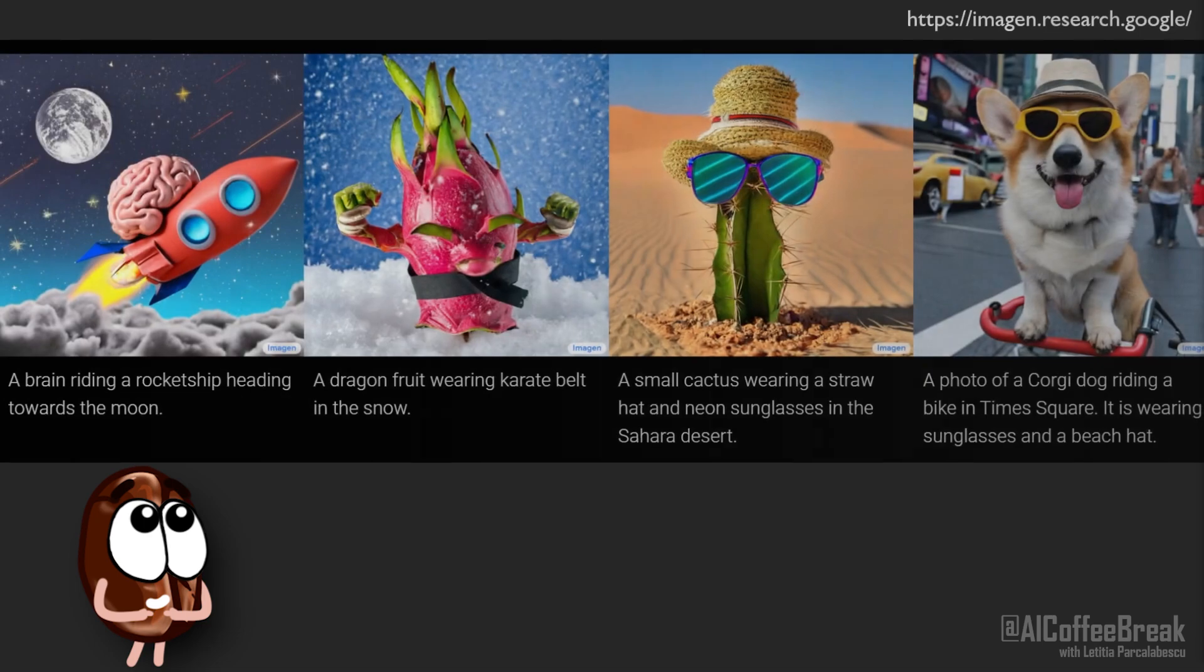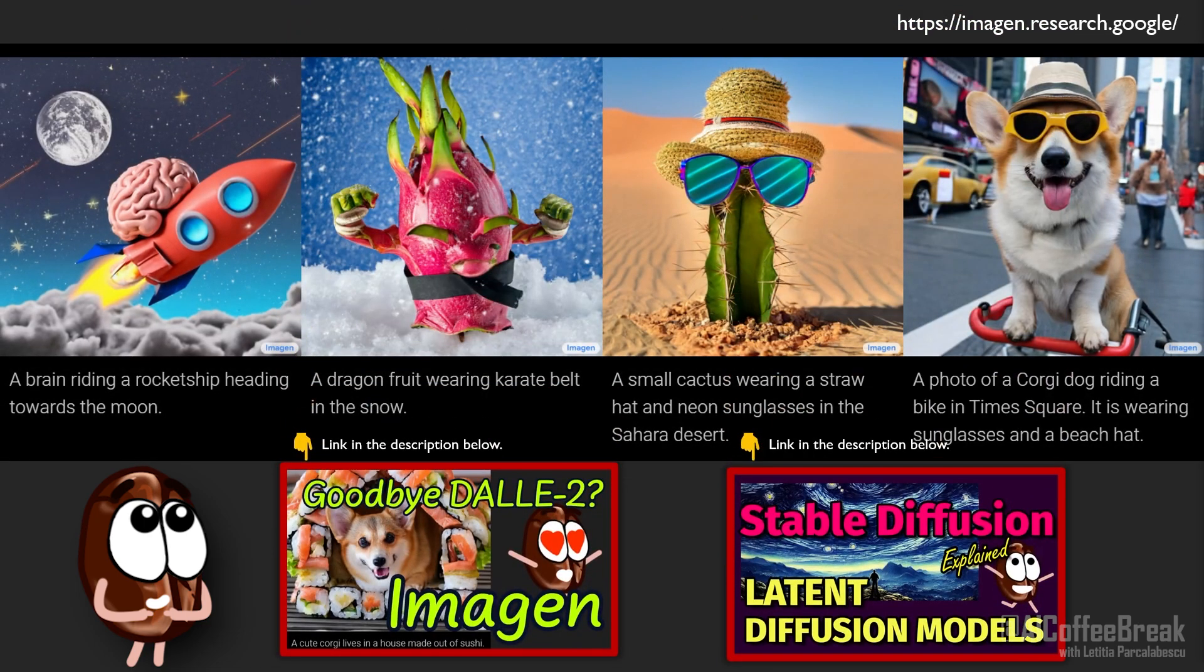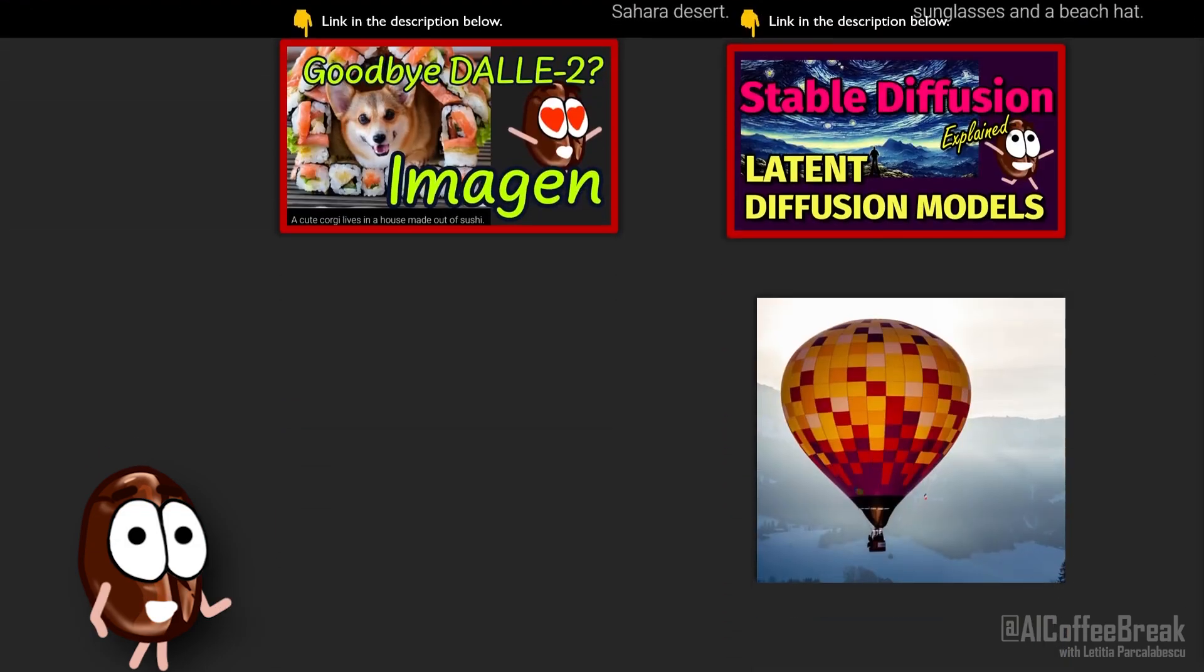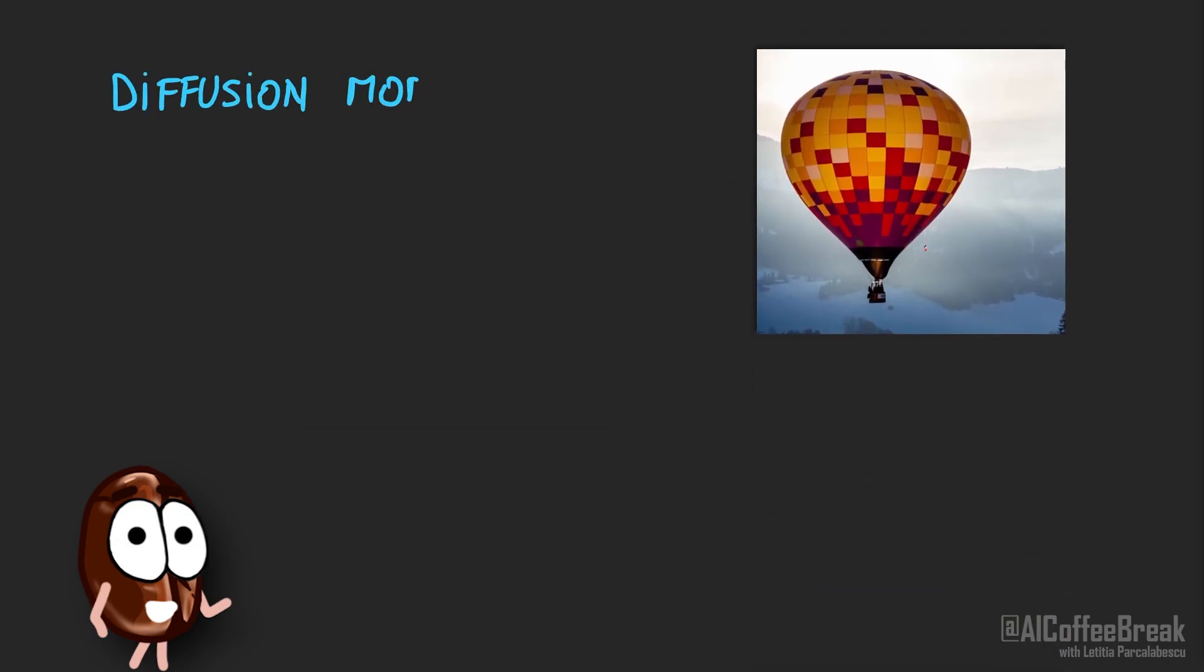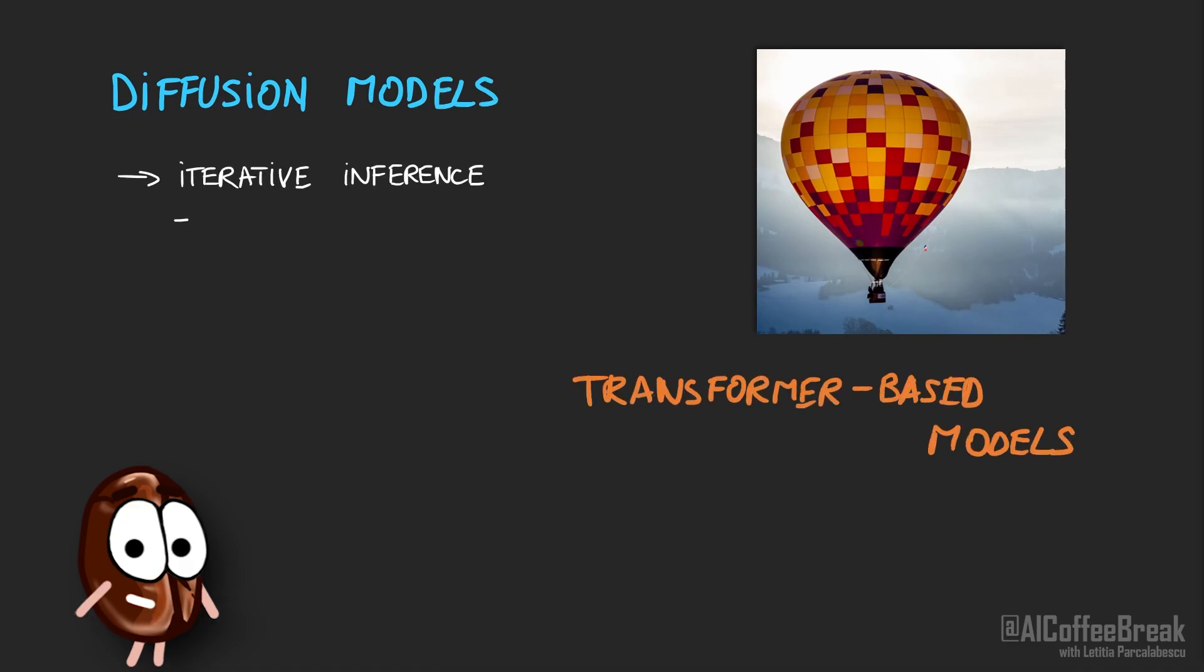Okay, it's still 2022 and if we think about image generation we are not thinking of GANs anymore, but of diffusion models such as DALI 2 or Stable Diffusion, Imagine and so on. For more details on diffusion models check out our previous videos. Or we are thinking of transformer-based image generation such as DALI 1. The outputs of these models are amazing, but they come at a computational cost.